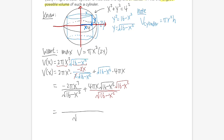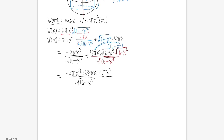Plugging x = √(32/3) into V(x) = 2πx²√(16−x²): x² = 32/3, and 16 − 32/3 = 48/3 − 32/3 = 16/3, so √(16/3) = 4/√3. Thus V = 2π·(32/3)·(4/√3) = 256π/(3√3). The largest possible volume is 256π/(3√3) cubic units.